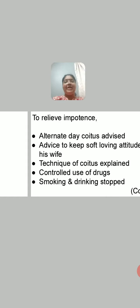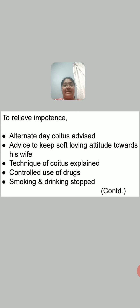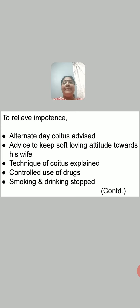We now come to the treatment of male infertility. To relieve impotence, which is one important cause of infertility, alternate-day coitus is advised — the male should not have coitus every day but every alternate day. He is also advised to keep a soft, loving attitude towards his wife, because without affection towards the wife, impotence may occur.